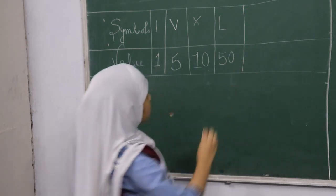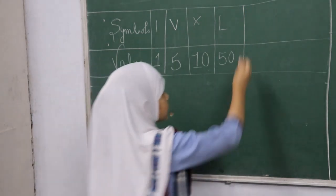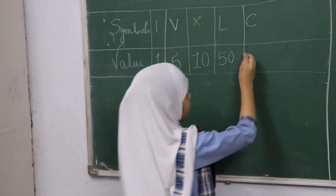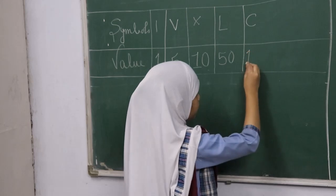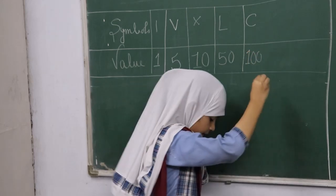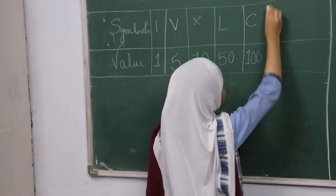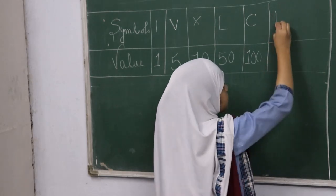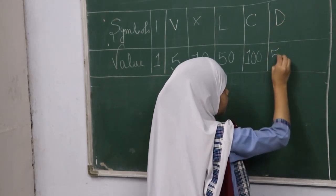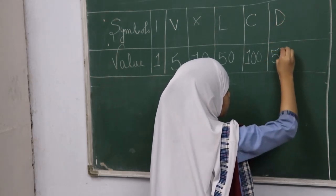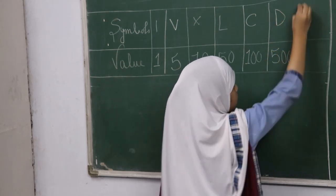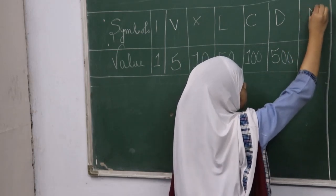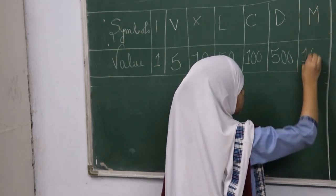The fifth symbol is C, whose value is 100. The sixth symbol is D, whose value is 500. And our last symbol is M, whose value is 1000.